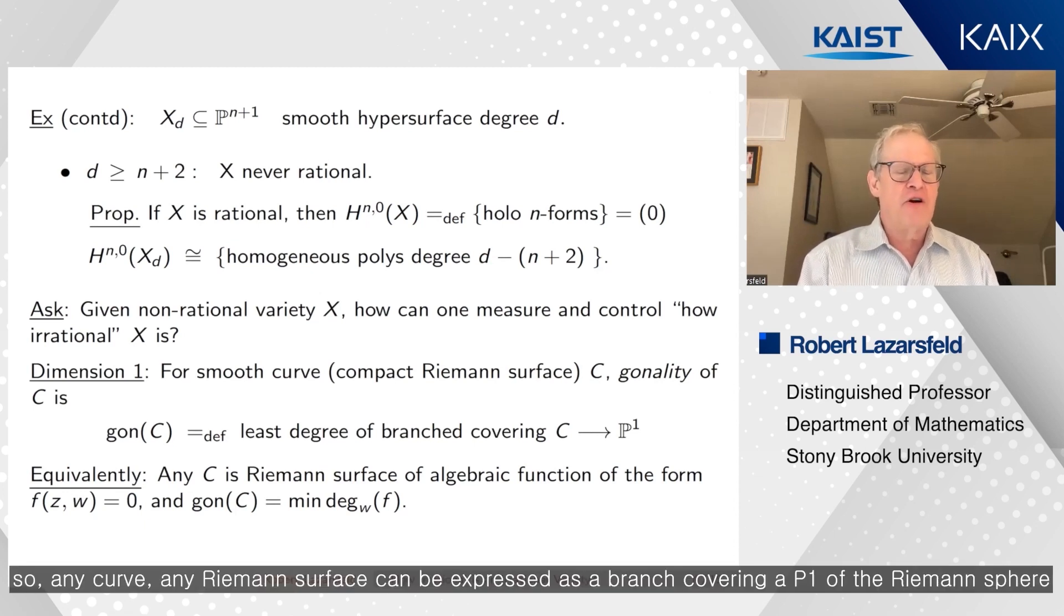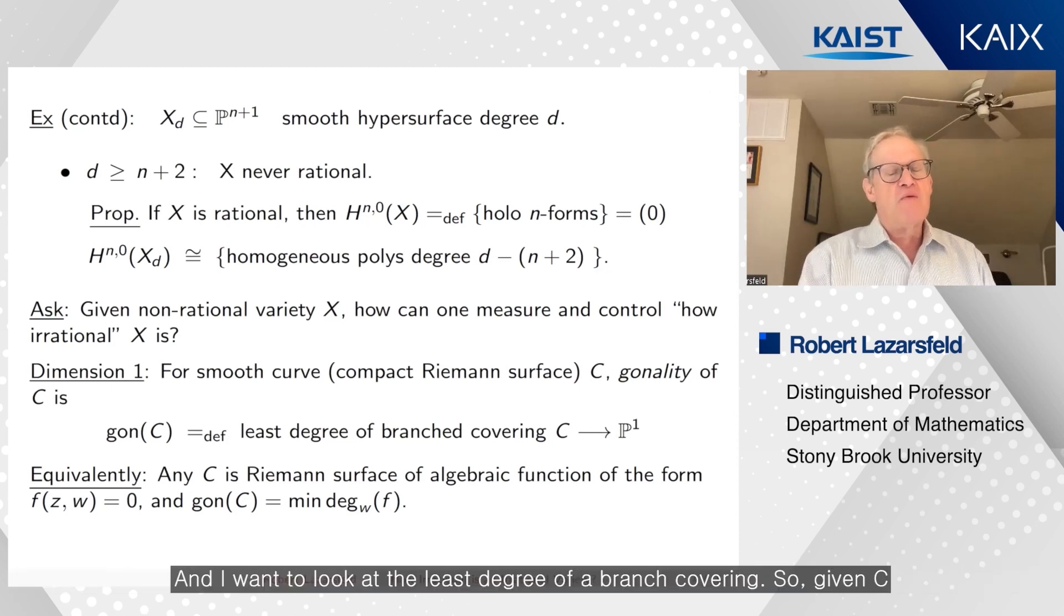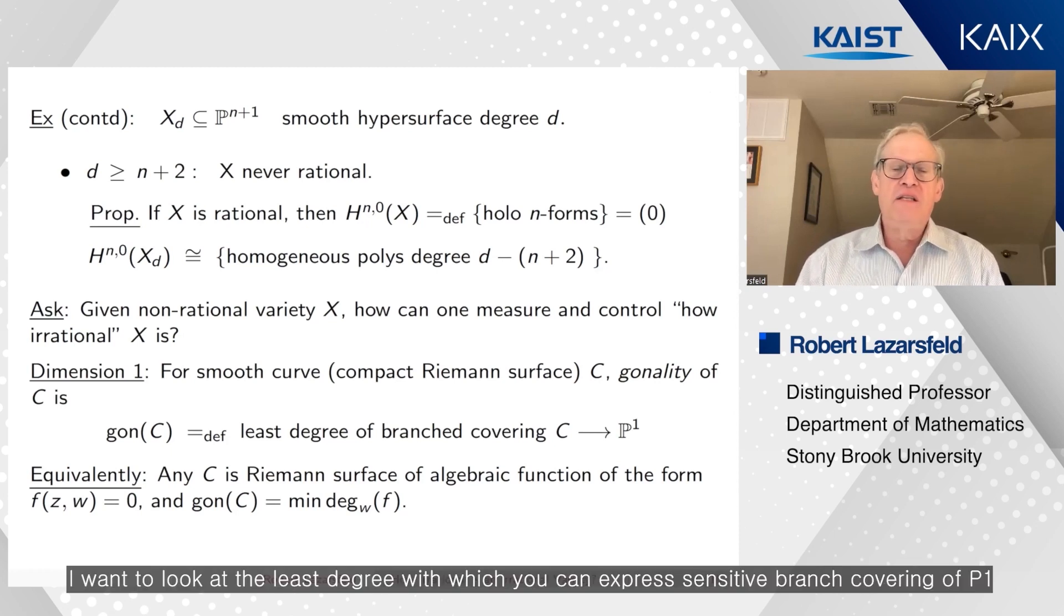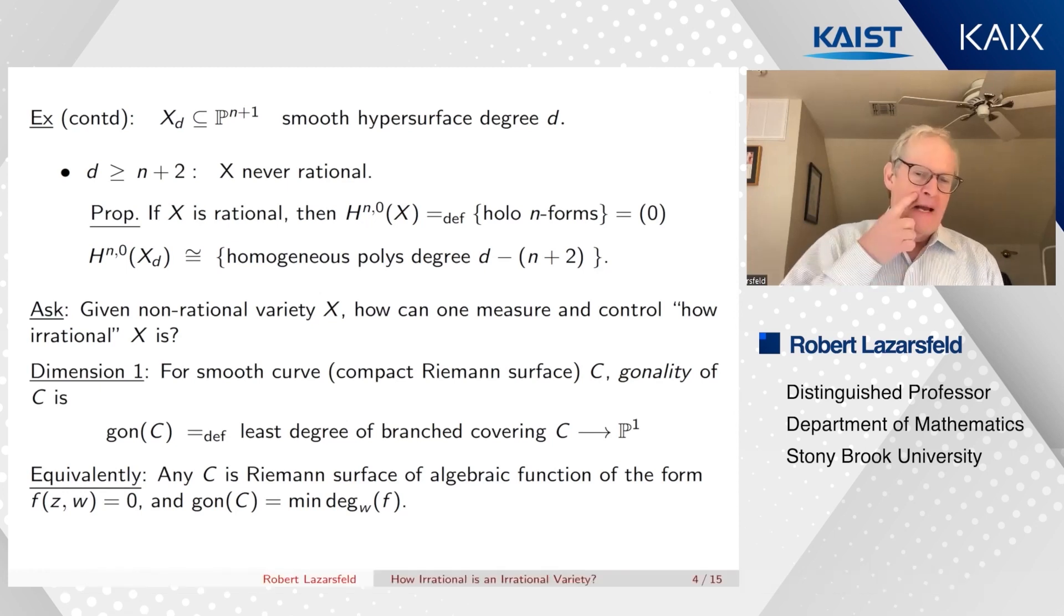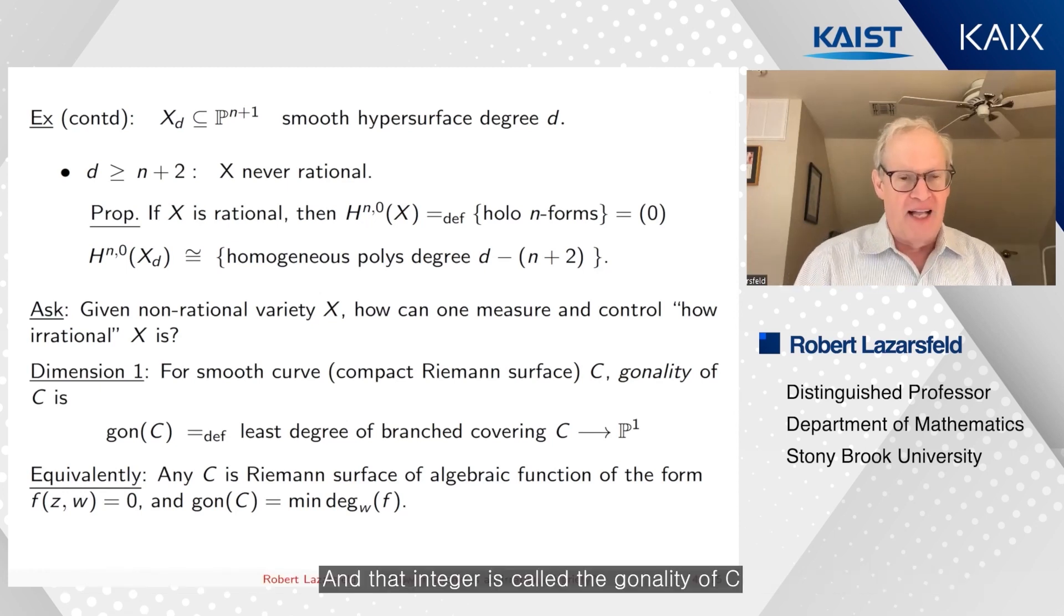And I want to define the gonality of C as follows. So any curve, any Riemann surface can be expressed as a branch covering of P^1 of the Riemann sphere. And I want to look at the least degree of a branch covering. So given C, I want to look at the least degree with which you can express as a branch covering of P^1. And that integer is called the gonality of C.